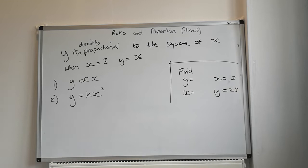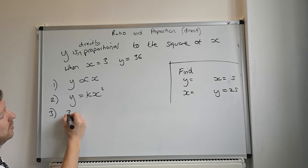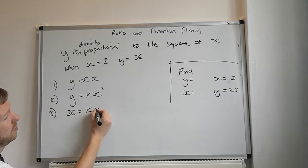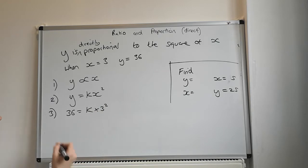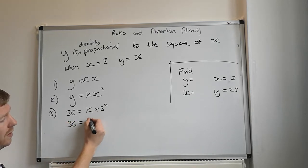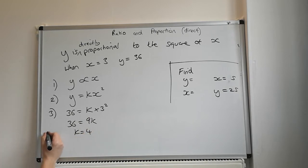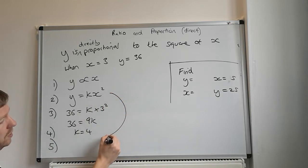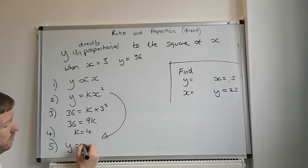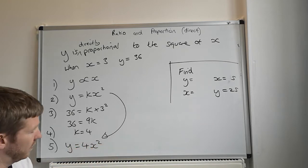x equals 3, substitute those numbers in. So step three, substitute the numbers in. You've got 36 for y, k times 3 squared. 36 is equal to 9k, k is equal to 4. So we've worked out what k is. Step five, rewrite our equation, our formula from part two. So y is equal to 4x squared. Hopefully that makes sense.